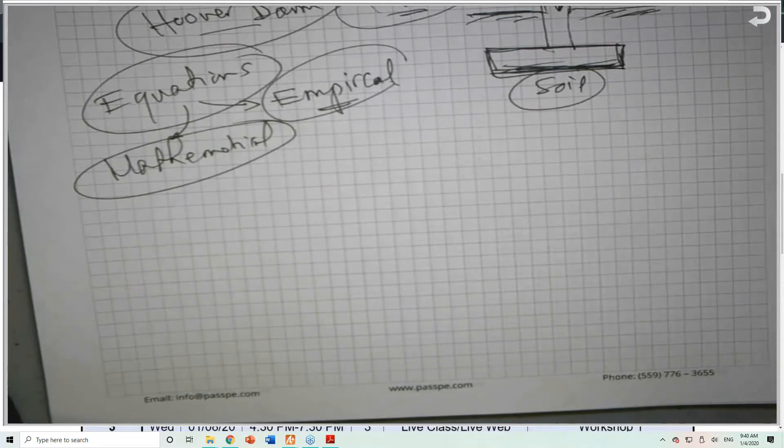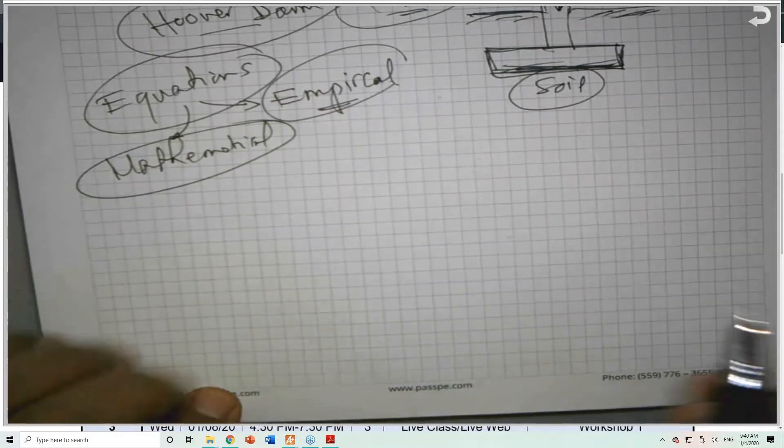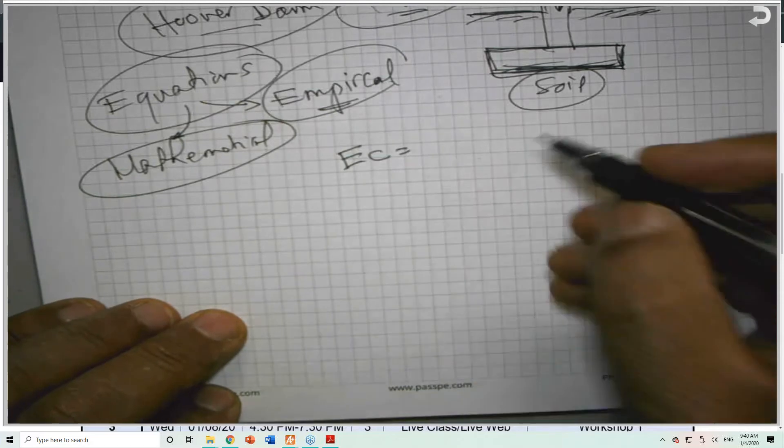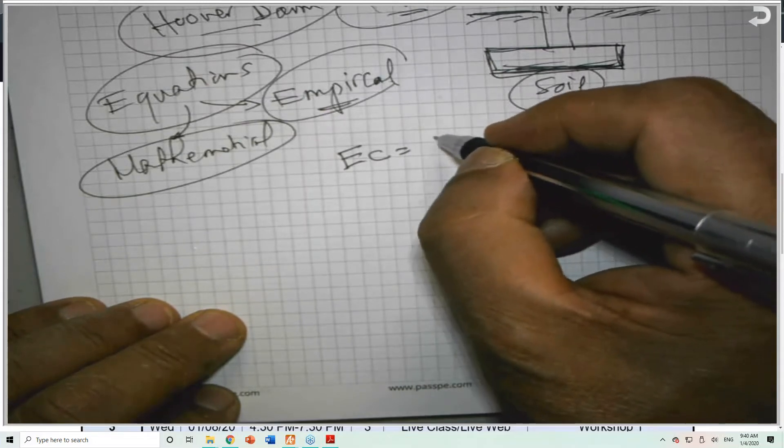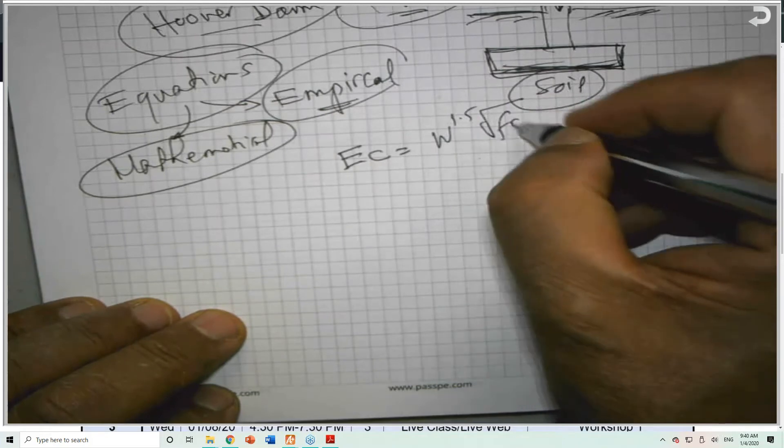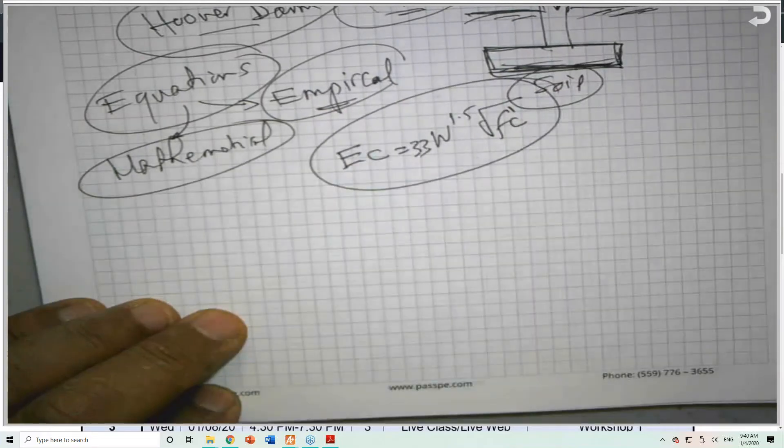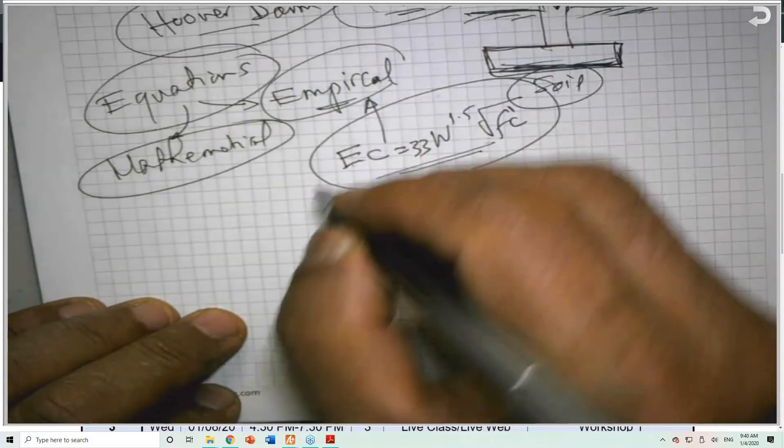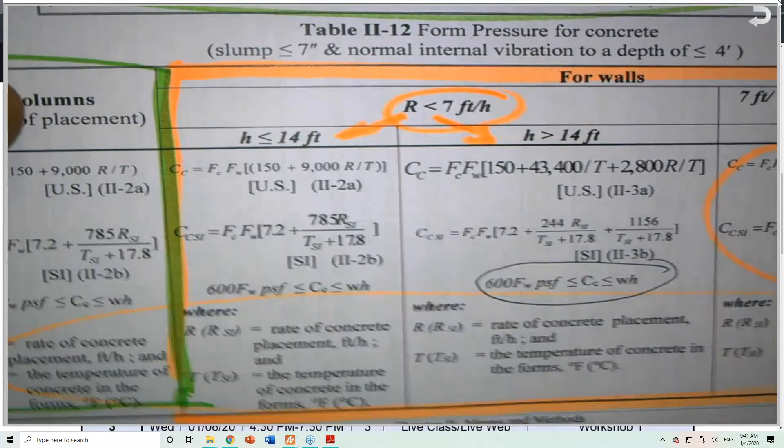Empirical equations are the result of testing. They did a lot of testing and they are using some mathematical formulation to come up with an equation that will fit the results. For example, the modulus of elasticity for concrete E sub C, we determine this in the lab, but they came up with one equation. And they are using W also. You will find that it is W raised to 1.5 times square root of f'c. And they multiply here, I believe, 33 if I remember the equation correctly. This is an empirical formula to determine the modulus of elasticity for concrete.